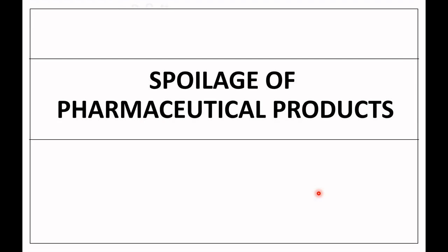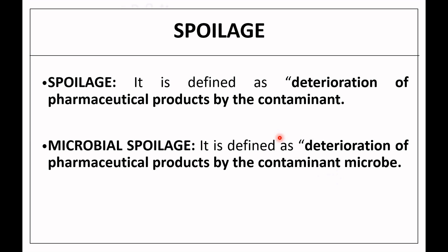Unit 5 is the first topic of Spoilage of Pharmaceutical Products. Spoilage is defined as deterioration of pharmaceutical product by contaminants. Any type of contamination may be physical, chemical, or biological. If the spoilage is from contaminating microorganisms, that spoilage is known as microbial spoilage — defined as the deterioration of pharmaceutical product by contaminant microbes.